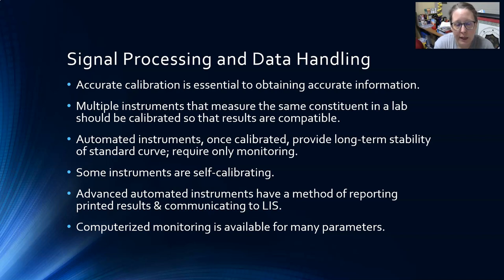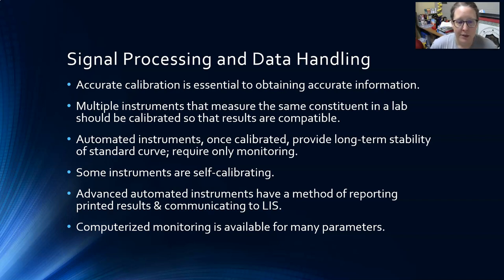Lastly, we have signal processing and data handling. Accurate calibration is essential for accurate testing results. Multiple instruments measuring the same constituent in the lab should be calibrated so results are comparable — for example, running glucose or creatinine on machine A or machine B should give the same results. Automated instruments, once calibrated, provide long-term stability of the standard curve and require only monitoring. Some instruments are self-calibrating.